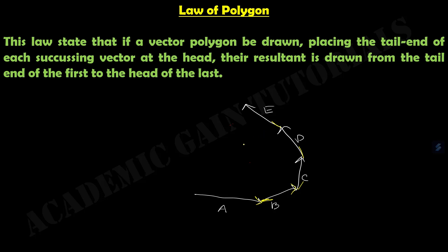Now, as the polygon law suggests, we connect the tail end of vector A to the head or arrow end of vector E.